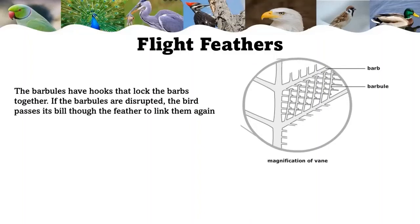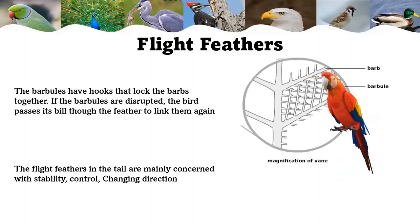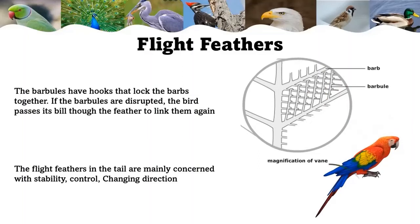If the barbules are disrupted, the bird passes its beak through the feather to link them again. The flight feathers in the tail are mainly concerned with stability and control. They are used as a rudder, helping to steer and balance the bird and allowing it to twist and turn in flight. These feathers also act as a brake for landing.